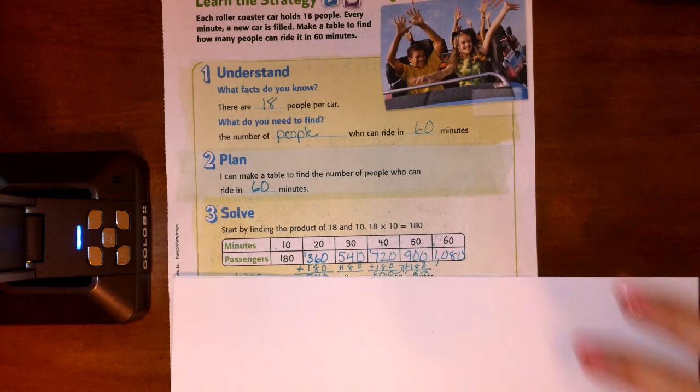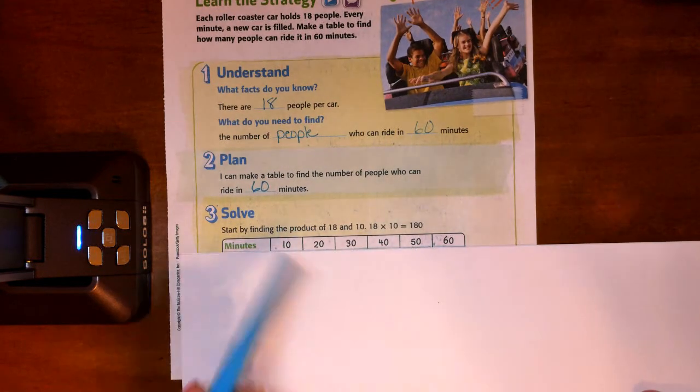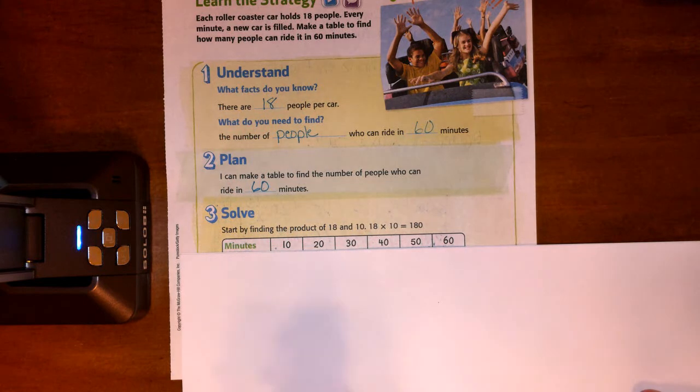And they ask us to start by finding the product of 18 and 10. And they do that because 10 is a nice round multiple. It would take us a really long time to build a chart that goes minute by minute. Because in 1 minute, 18 people can ride. In 2 minutes, 36 people can ride. In 3 minutes, 54 people can ride. That's going to take us a really long time to get to 60.